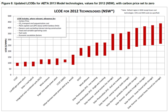This can be roughly calculated as the net present value of all costs over the lifetime of the asset divided by the total electrical energy output of the asset.